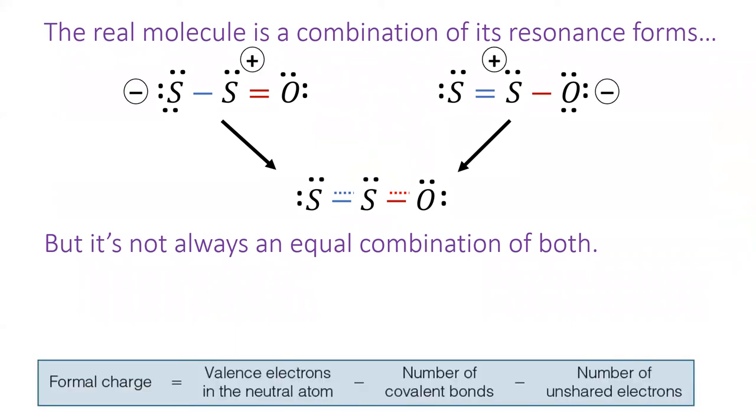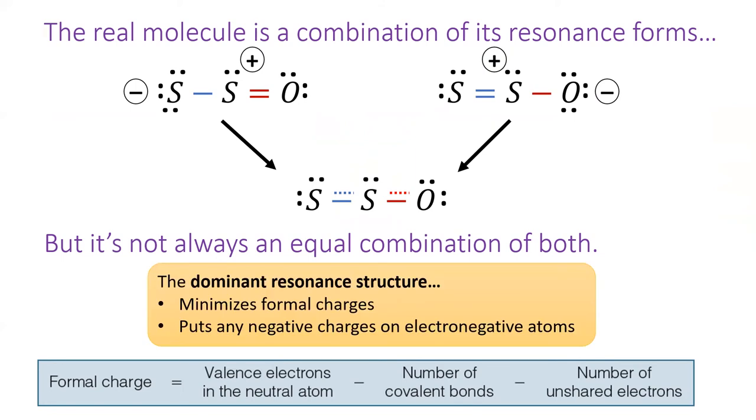To determine which resonance structure the real molecule represents, we need to calculate formal charges for each atom, as I've already done on the top two resonance structures. The dominant resonance structure minimizes the overall number of formal charges and puts any negative charges on the electronegative atoms. This is the same process we use to decide the best Lewis structure.